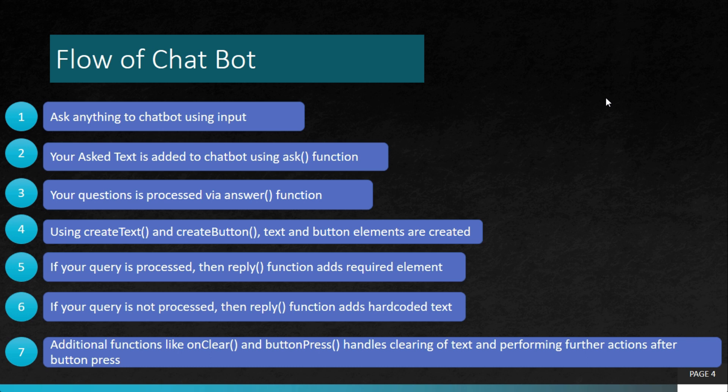Your question is then processed via the answer function — this is where you can either call an API from the backend or use your own if-else queries or hard-coded values in the UI. When that is done, you use the create text or create button functions. Based on the response, either a text or a button is added to the chatbot interface, using functions where you just pass the values and they automatically create a text box or a button.